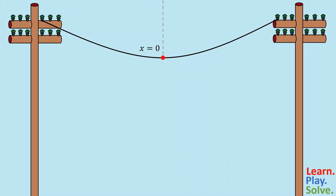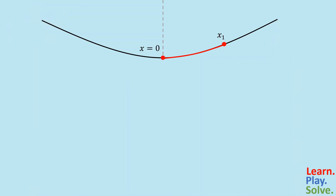Then we'll pick another point somewhere else on the curve, anywhere, and we'll call that point x1. We can now focus on the section of the curve between these two points. At any given moment, this piece of cable has three directional forces acting on it.